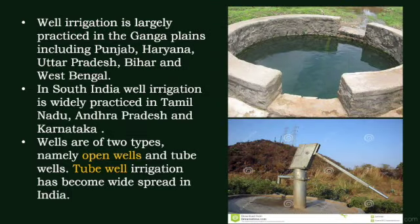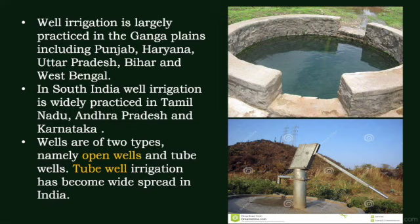Well irrigation is largely practiced in the Ganga plains including Punjab, Haryana, Uttar Pradesh, Bihar and West Bengal. In South India, well irrigation is widely practiced in Tamil Nadu, Andhra Pradesh and Karnataka. Wells are of two types: open wells and tube wells. Tube wells are also called bore wells, and tube well irrigation has become widespread in India.